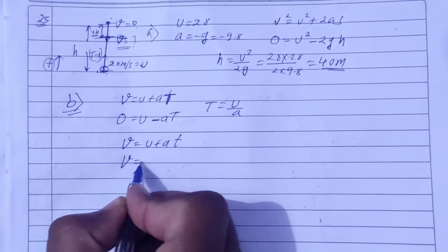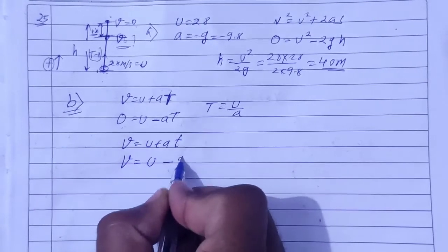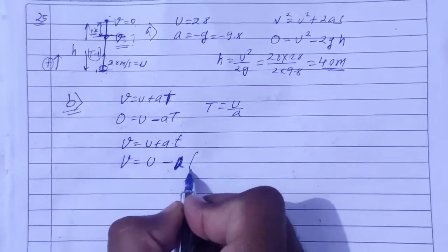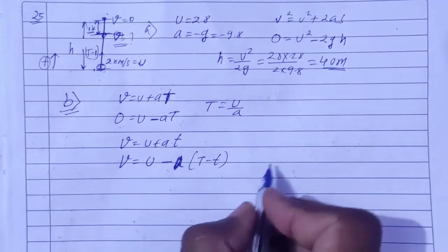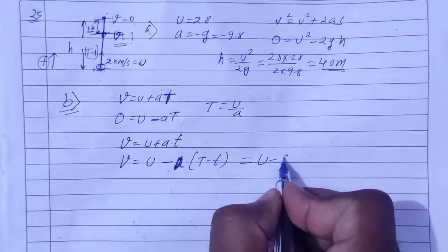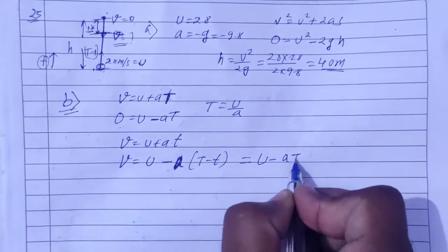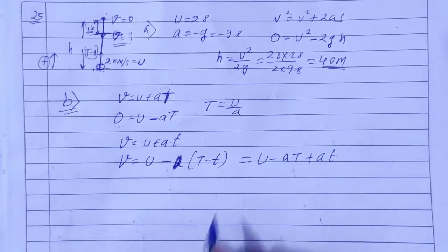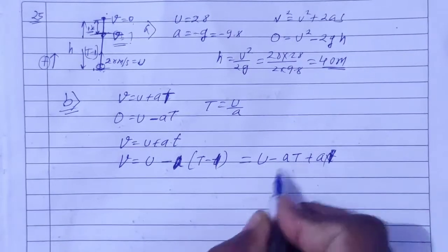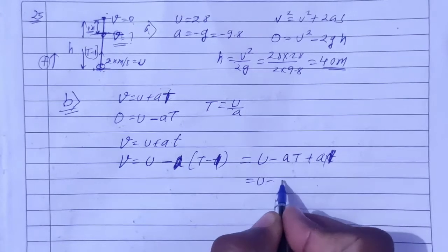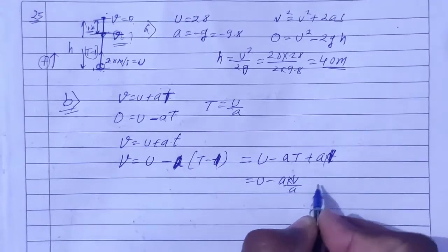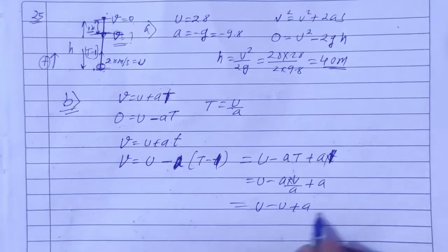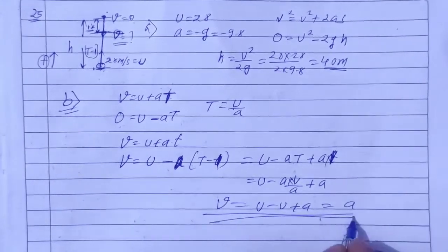So v = u + a(T-1). We know u, we know a = -g, and T = u/g. Substituting: v = u - g(u/g - 1) = u - u + g. The u terms cancel out, giving v = g = 9.8 meter per second.